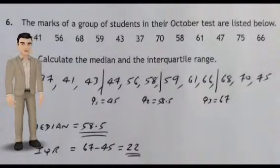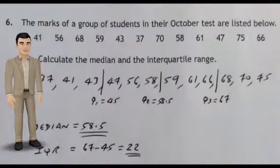So the median is 58.5 and the interquartile range is 67 minus 45, which is 22.